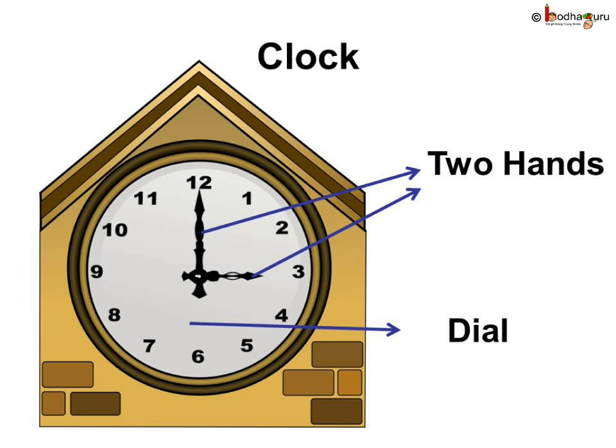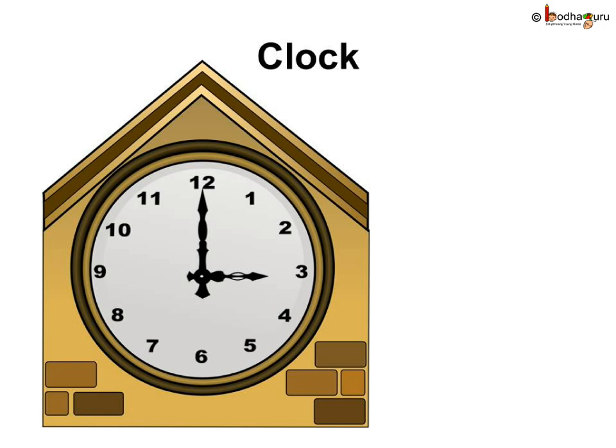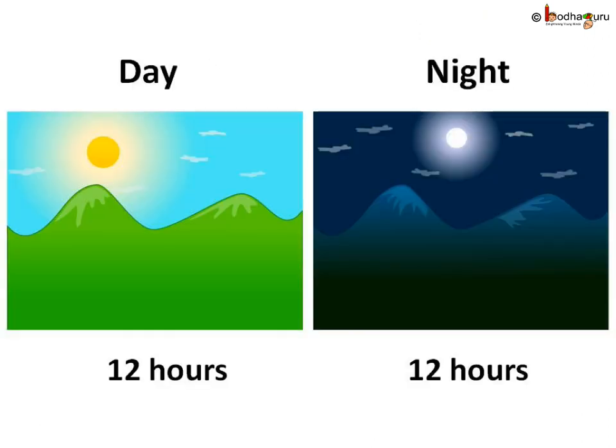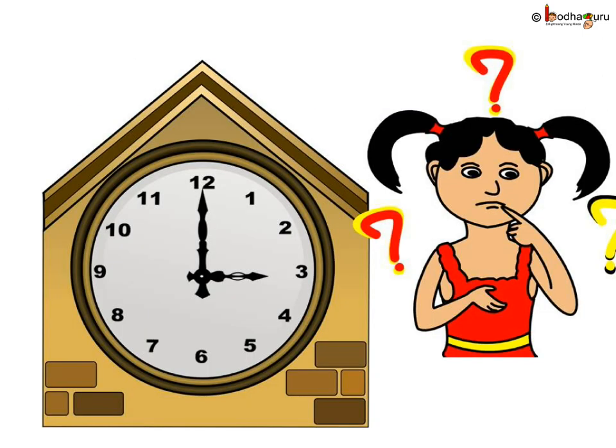A clock has two hands, and the face of a clock is called the dial, which is in the shape of a circle. The dial of the clock is divided into 12 equal parts, with numbers written from 1 to 12. We know a day consists of 24 hours, so for simplicity we divide equal time for daytime and nighttime — 12 hours for daytime and 12 hours for nighttime. Hence the clock has 12 equal parts.